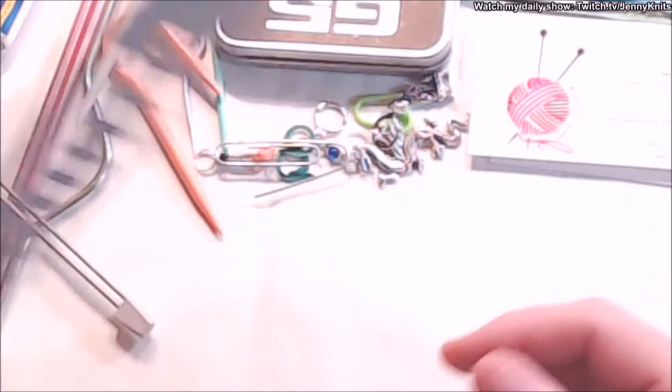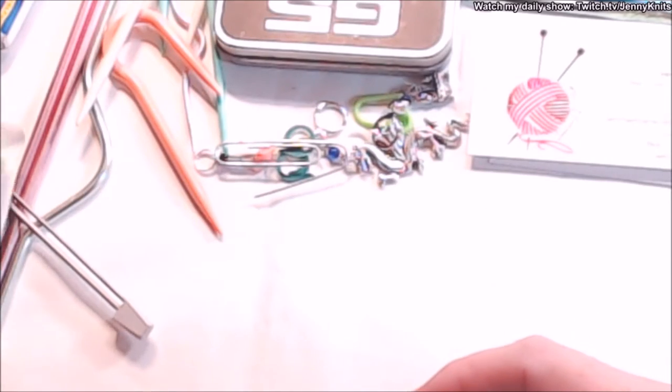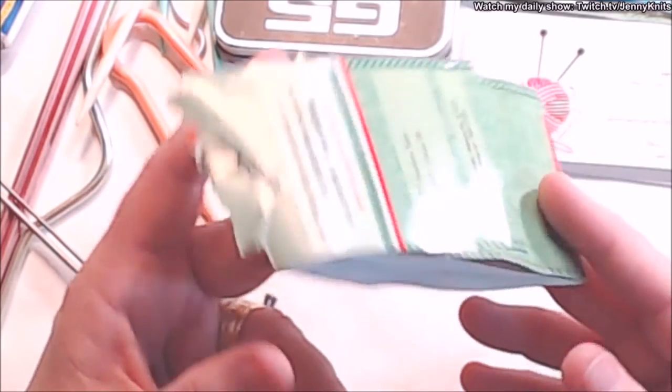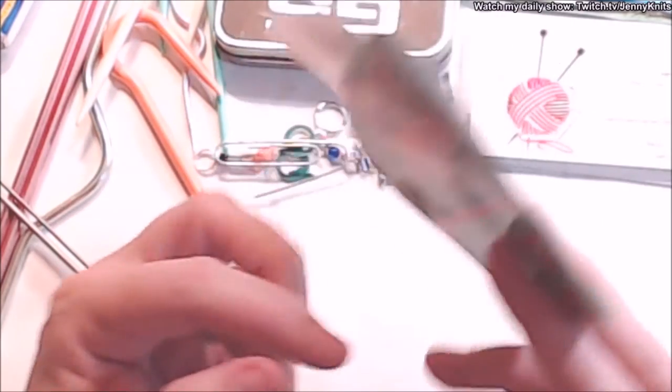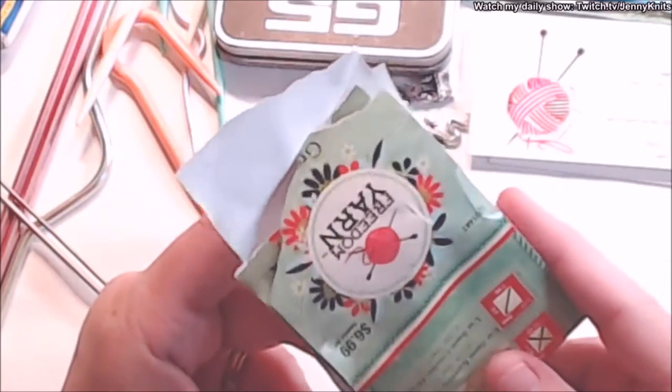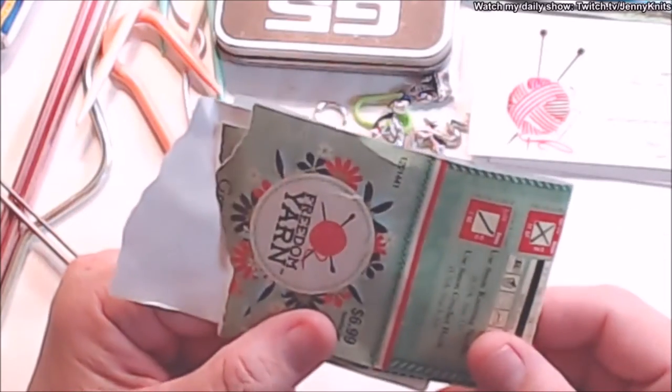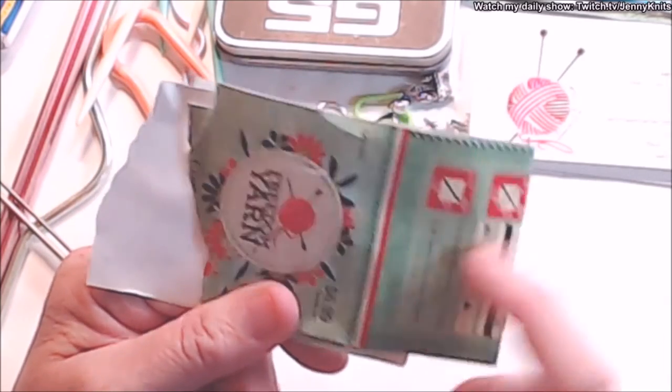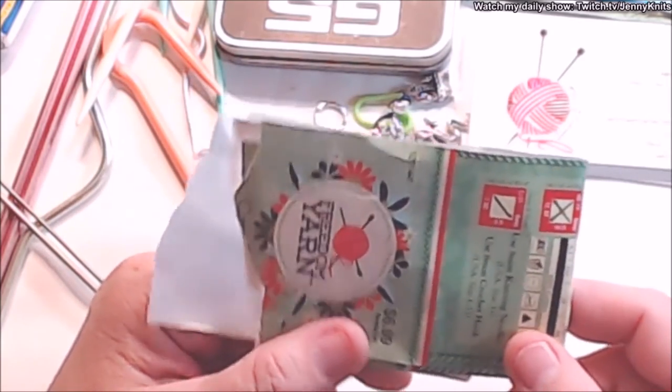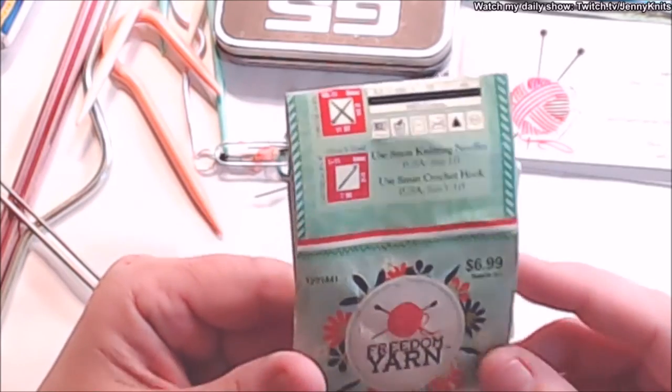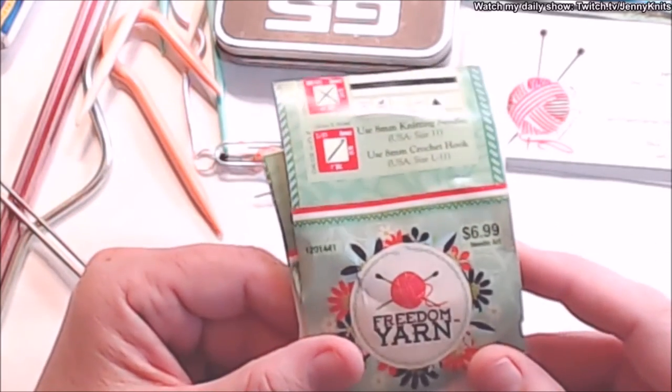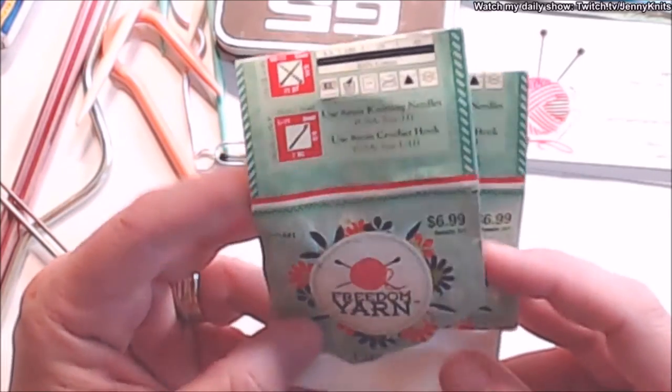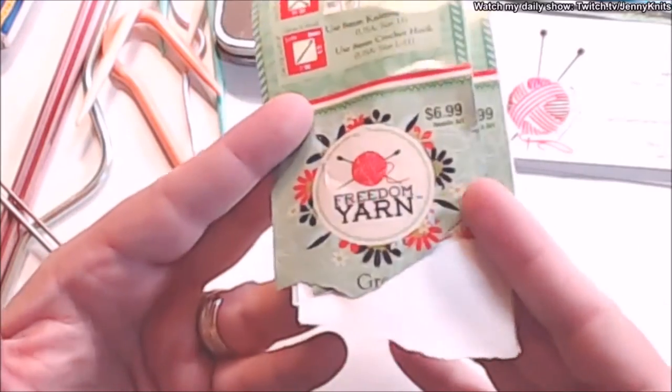Another thing I carry in my kit a lot of times is whatever my current project is - the labels from the yarn. I keep my labels for a while so if this is a gift I'm giving to somebody and I need to let them know what the yarn is made out of so they can properly take care of it, if it's wool so they do not wash it in hot water. I keep the yarn label with the instructions until I no longer need it.